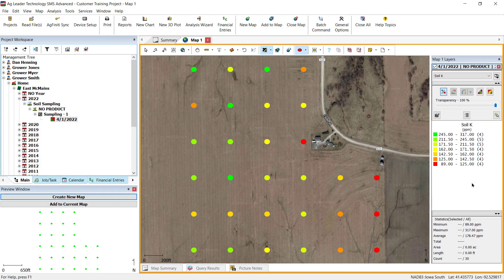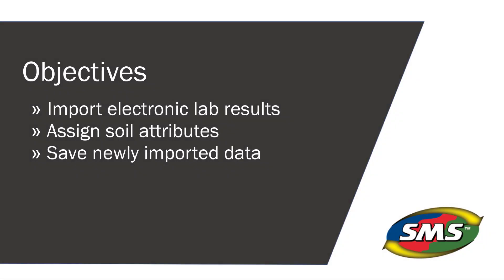The imported results will now be in the management tree, to be mapped, included in reports, displayed in summaries, and used in queries. You have now learned how to import electronic soil sampling results, assigned the desired attributes, and saved the soil sampling attributes that you linked.